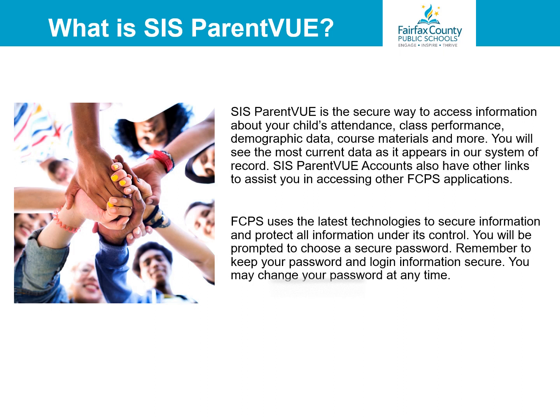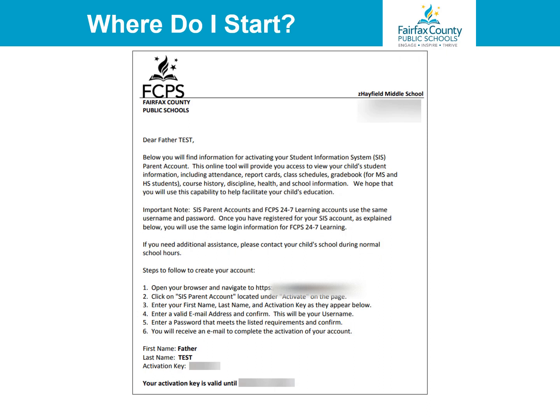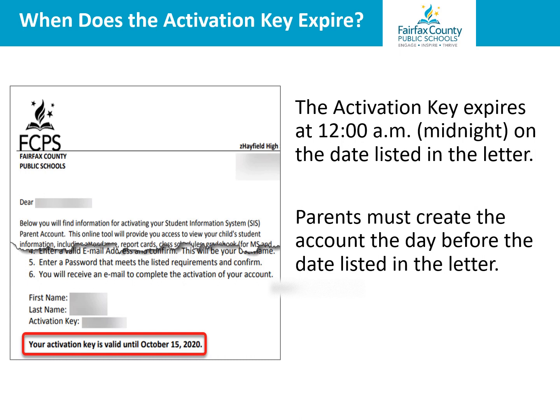SIS ParentVUE accounts also have other links to assist you in accessing other FCPS applications. Parents or guardians will need to contact the child's school during regular school hours to request an activation letter for SIS ParentVUE. The school will create a letter with an activation key and detailed instructions on how to create the account. The activation key expires at 12 a.m. midnight on the date listed in the letter. Parents must create the account the day before the date listed in the letter. If the activation letter is misplaced or wasn't received, please contact your child's school.